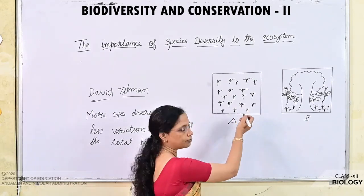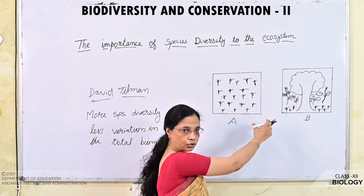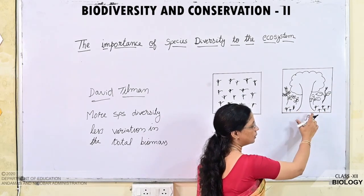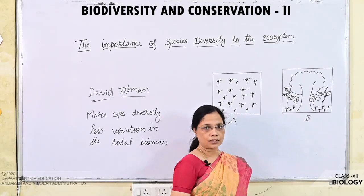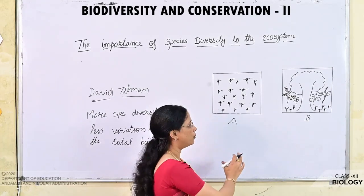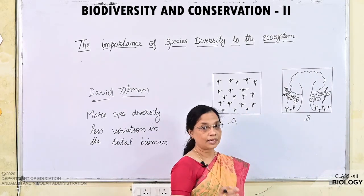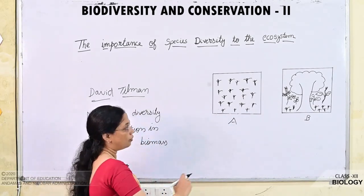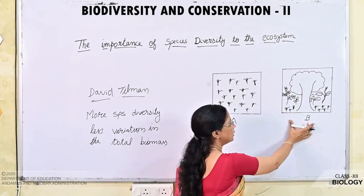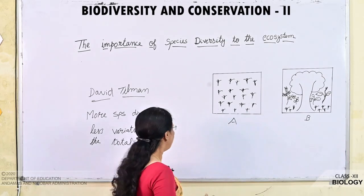So the animal species which depend on this grass may either move out of plot A or they may die. Meanwhile, in plot B the animal species which depend on grass can move to other plants. So in plot A there is a large variation in total biomass, but in plot B there is less variation. This is what David Tilman concluded: where species diversity is more, there will be less variation in total biomass.